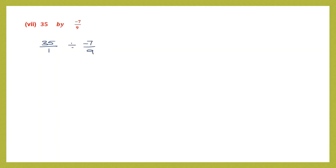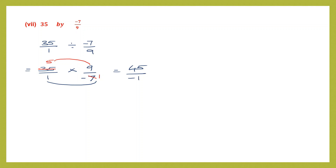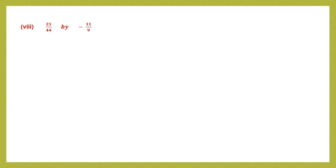Question 7: 35 written as 35 by 1, divided by minus 7 by 9. First number stays as 35 by 1; reciprocal of minus 7 by 9 becomes 9 by minus 7. Cancel 7 and 35 giving minus 1 and 5. Multiply numerators: 5 into 9 is 45. Denominator: 1 into minus 1 is minus 1. Move the minus sign to top — answer is minus 45.